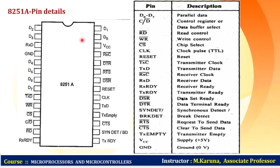Now let us look at the pin diagram of 8251A — you should know each and every pin function. The pins include D0 to D7 for parallel data, C/D-bar for control register or data buffer select, read control, write control, chip select, clock signal, reset signal, transmitter clock, transmitter data, receiver clock, receiver data, and receiver ready.